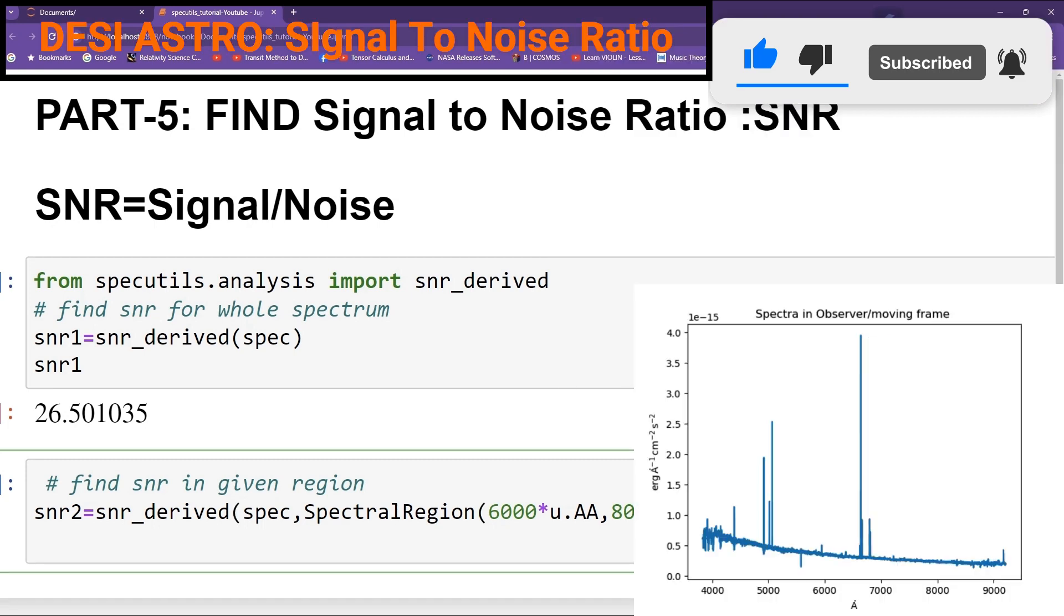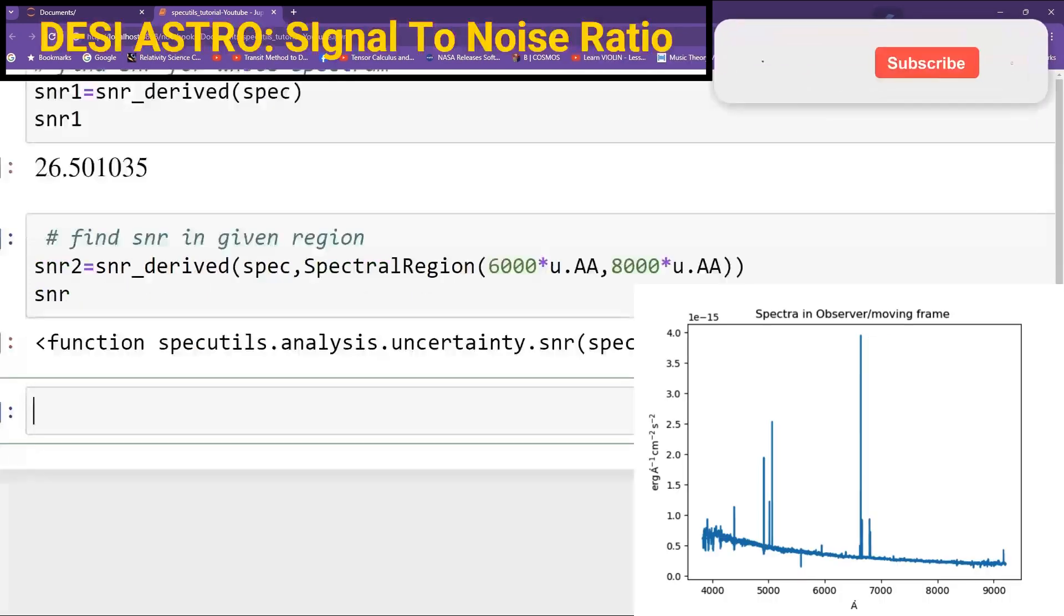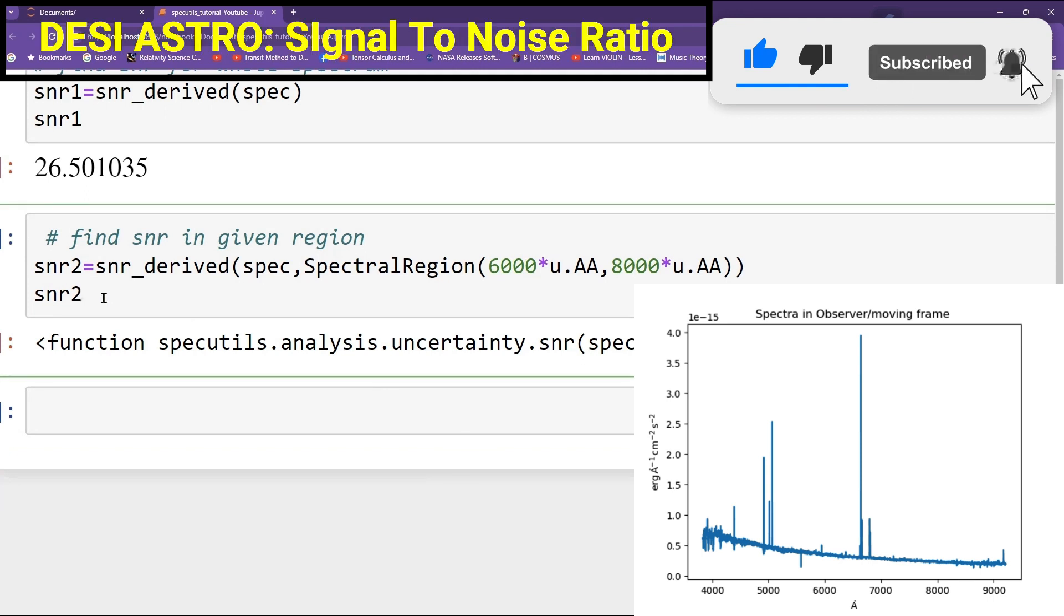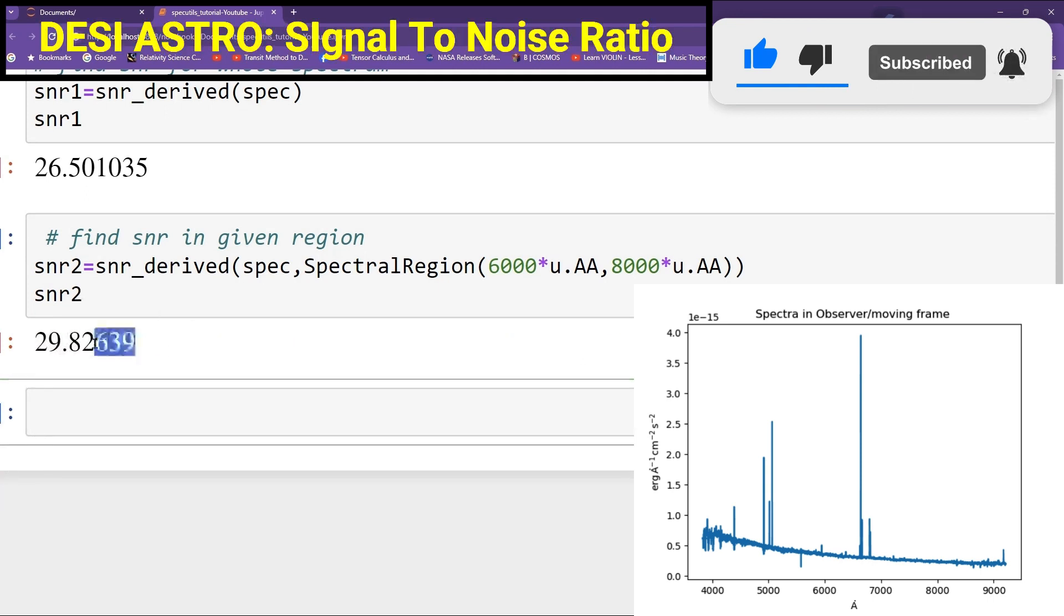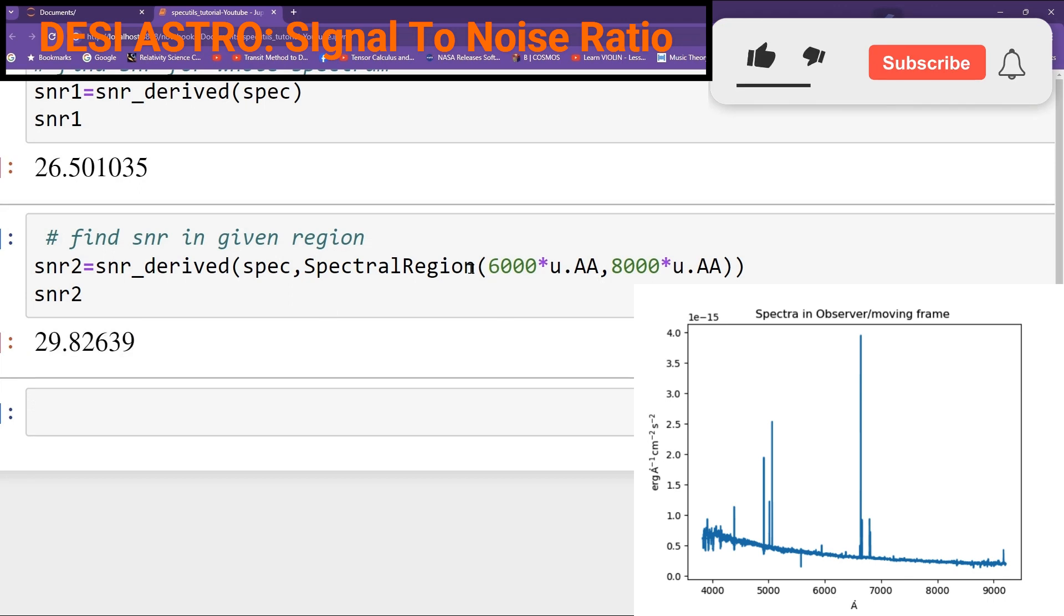Now get SNR2. Get SNR2. So you can see here is, in that region, you have a very high SNR.